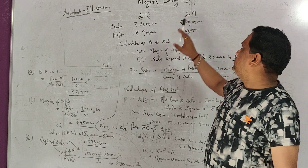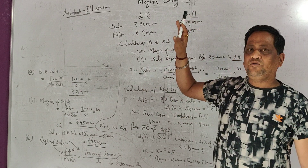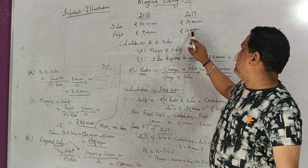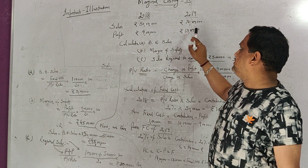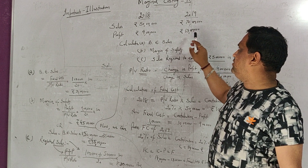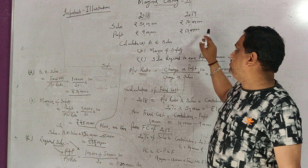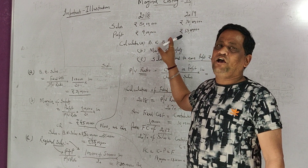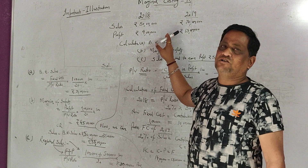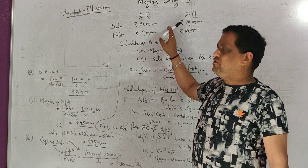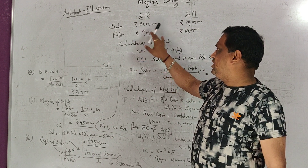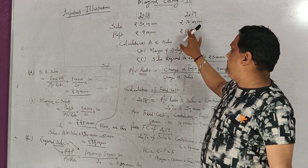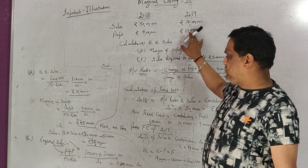For 2019, profit is 13 lakh. So margin of safety = 13 lakh divided by 20% = 65 lakh. So the two years have different margin of safety: 45 lakh for 2018 and 65 lakh for 2019.